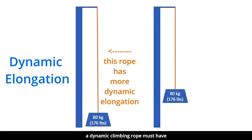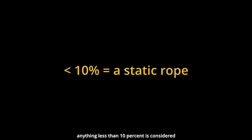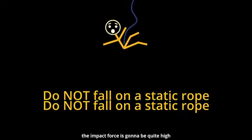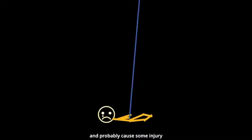For a dynamic climbing rope, we must have dynamic elongation between 10% and 40%. Anything less than 10% is considered a static rope. You don't want to fall on a static rope. Impact force is just gonna be quite high and probably cause some injury.